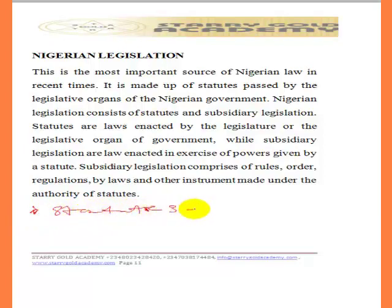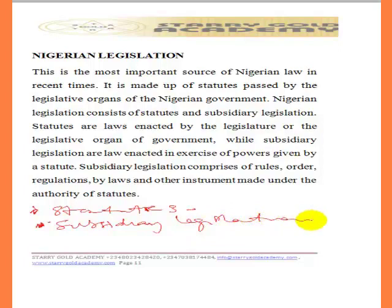We have statutes, and we also have subsidiary legislation. Subsidiary legislation includes law made by local government and any other institution empowered to make law, such as educational institutions where the senate sits and passes law. These are known as subsidiary legislation because those laws do not pass through the normal legislative process. Only laws from the National Assembly and State House of Assembly pass through the normal legislative process — that is why those laws are known as statutes, while others are known as subsidiary legislation.